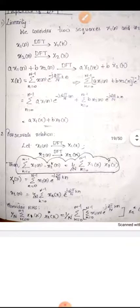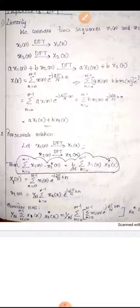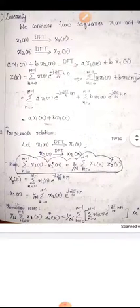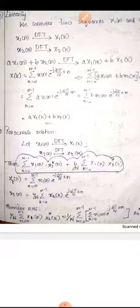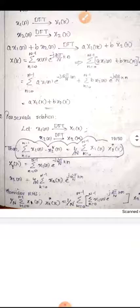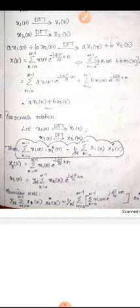Let the DFT of X1(N) be X1(K) and the DFT of X2(N) be X2(K). Parseval's theorem states: sigma N=0 to N-1 of X1(N) · X2*(N) = (1/N) · sigma K=0 to N-1 of X1(K) · X2*(K), where * denotes the complex conjugate. This is Parseval's theorem.